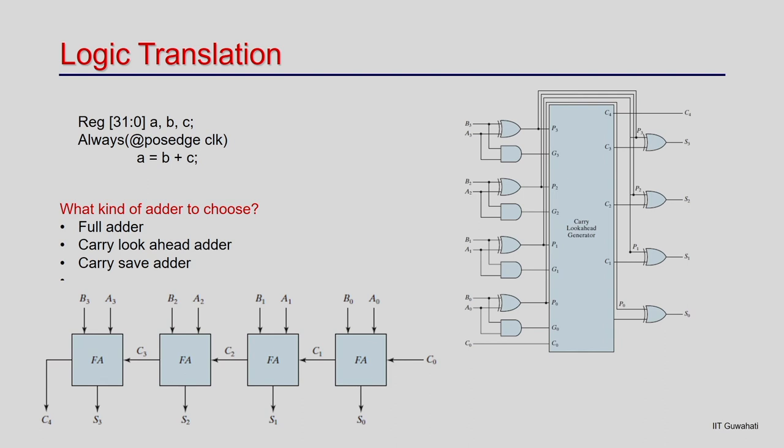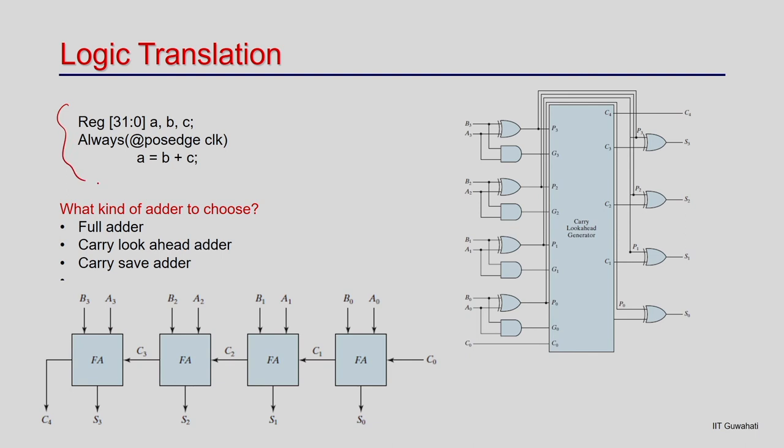The objective here is not to cover all algorithms behind logic translation, but to understand what the problem is and how it is tackled in automation tools. As an example, in RTL code you might have registers a, b, c and every clock cycle do a = b + c — an addition. When the tool reads this, it must identify this is an addition operation and represent it as an adder in the RTL.